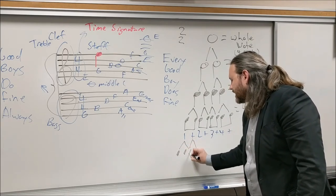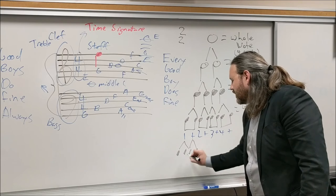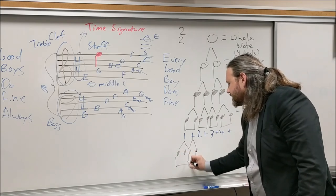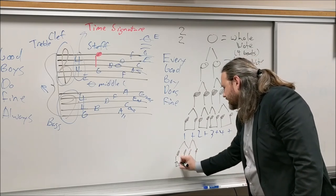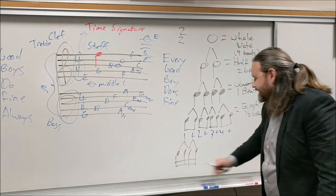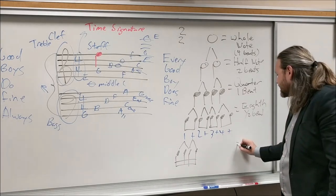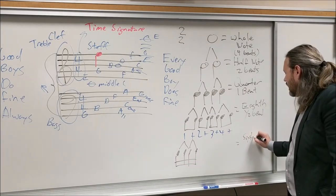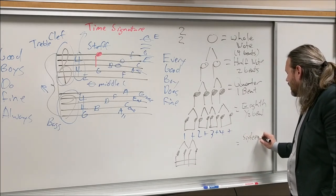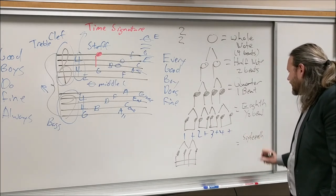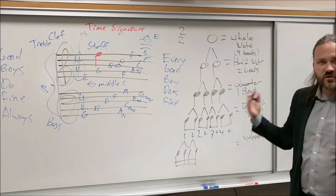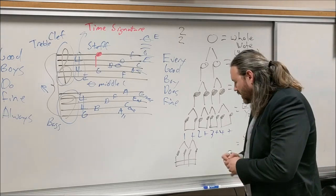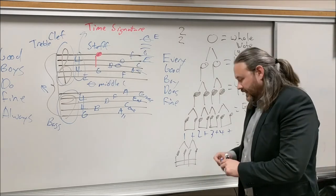When you divide eighth notes again, you add a second beam — that becomes a 16th note, which is a quarter of a beat. For four 16th notes per beat, we count them as 'one-e-and-a.'